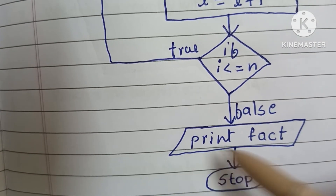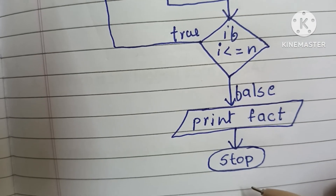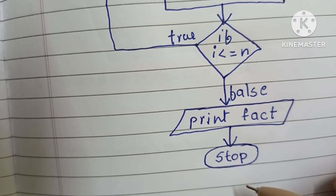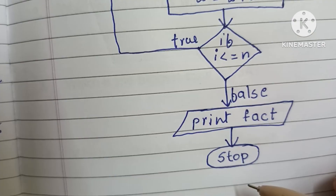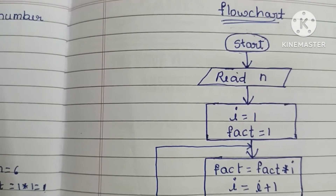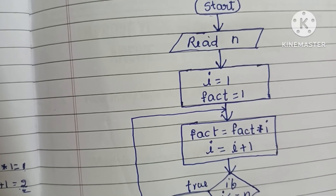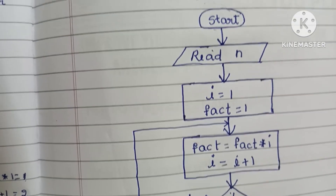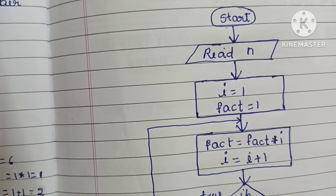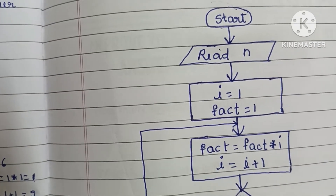Output value is written within a parallelogram shape. Next we stop the flowchart using the stop statement. This is the flowchart to find the factorial of a number. If you like my video please like and subscribe to my channel. Thank you for watching, all the best.